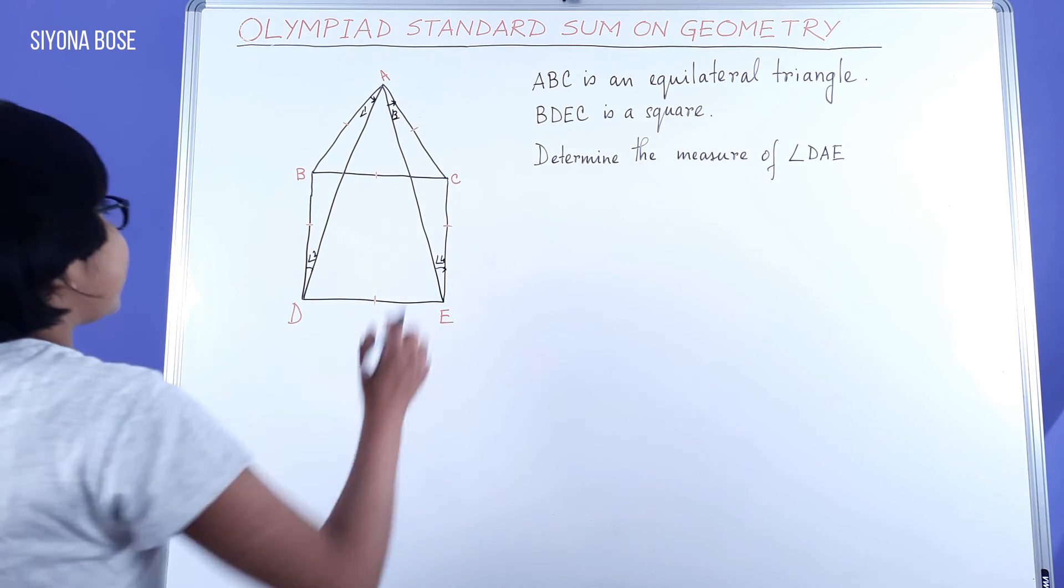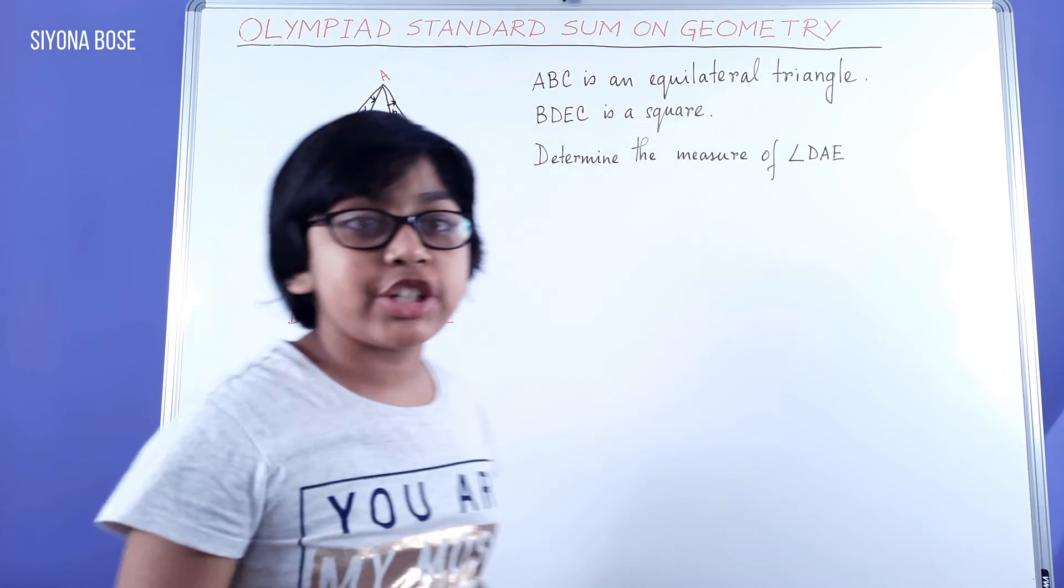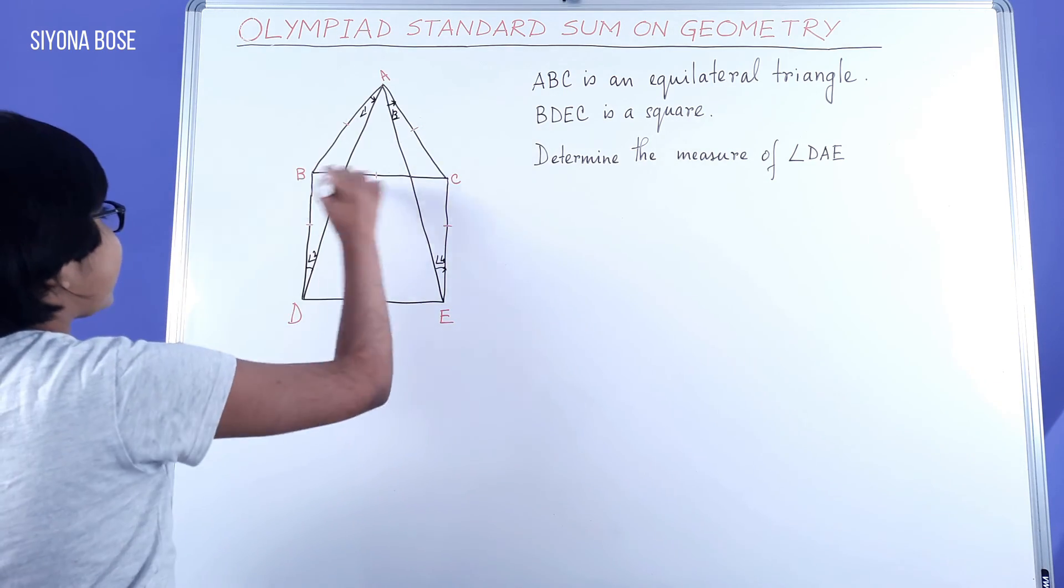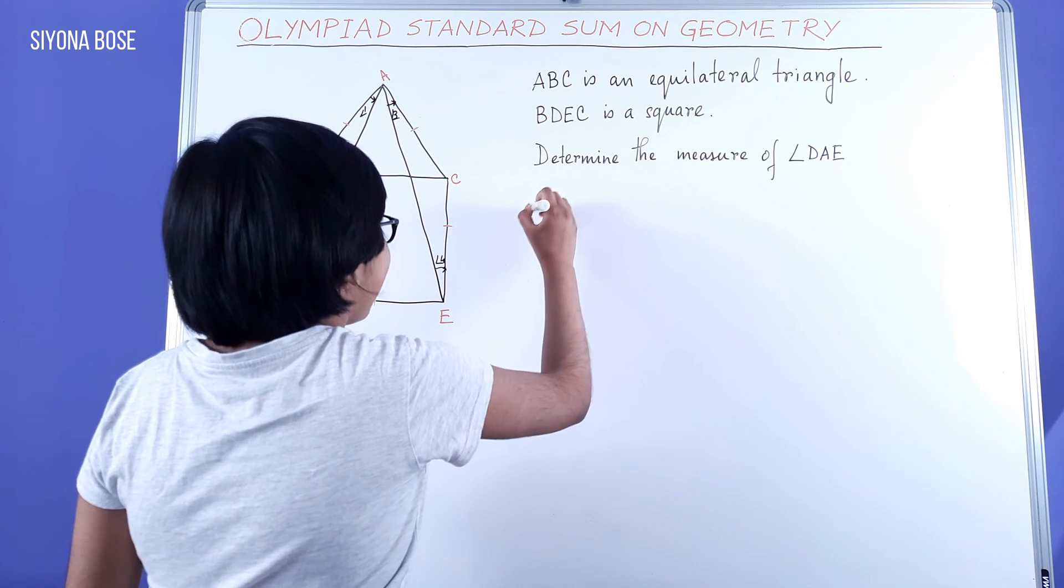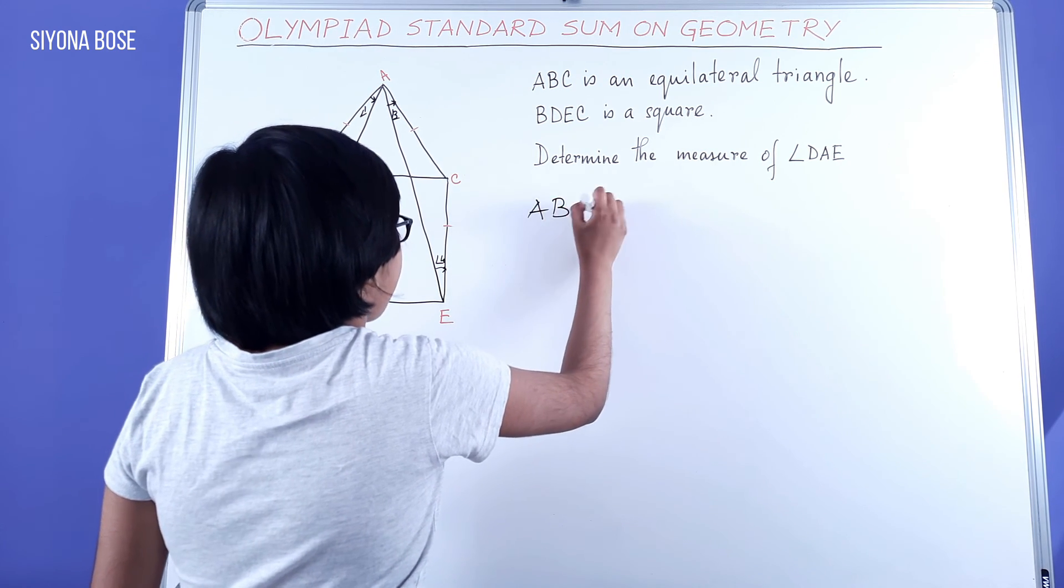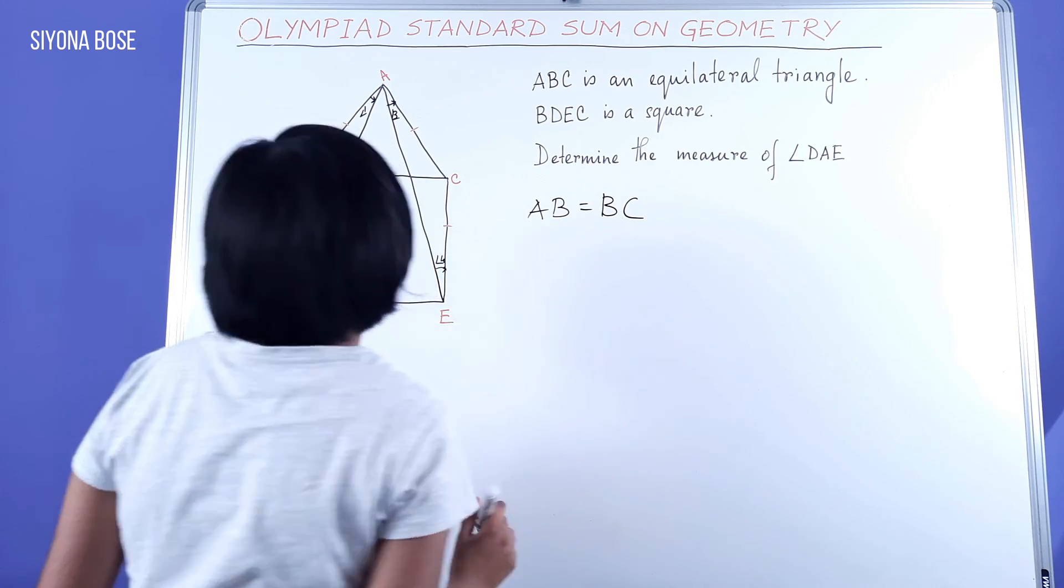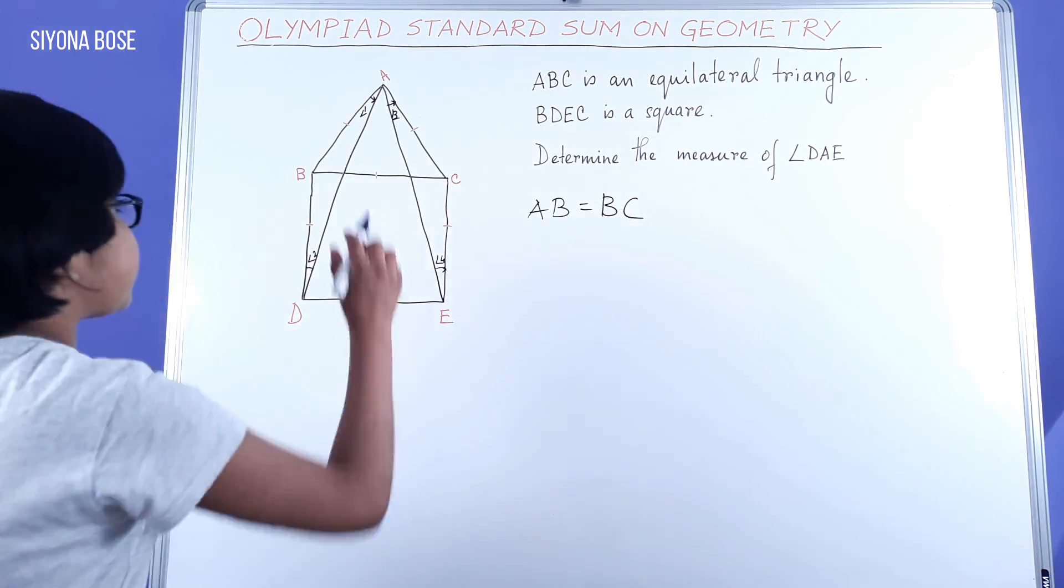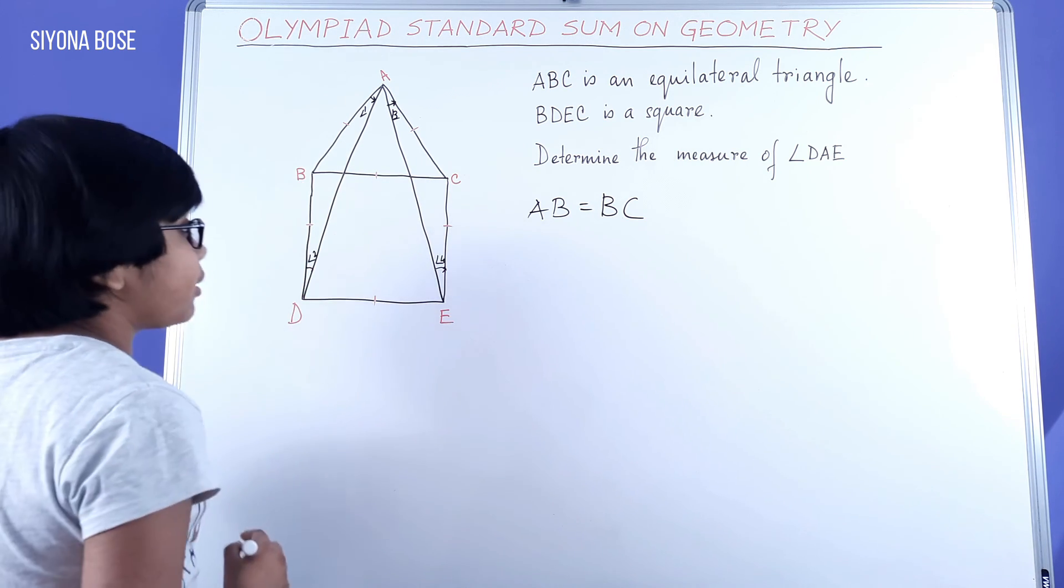First, we can see this is an equilateral triangle in which all sides are equal, which means AB equal to BC. Again, all sides of a square are equal, which means BC equal to BD.